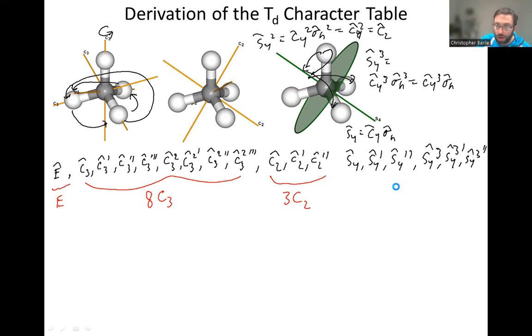And so these are all improper rotation axes. Mathematically, they're all very similar. And so we're going to group them into the six S4 class with six improper rotation axes.